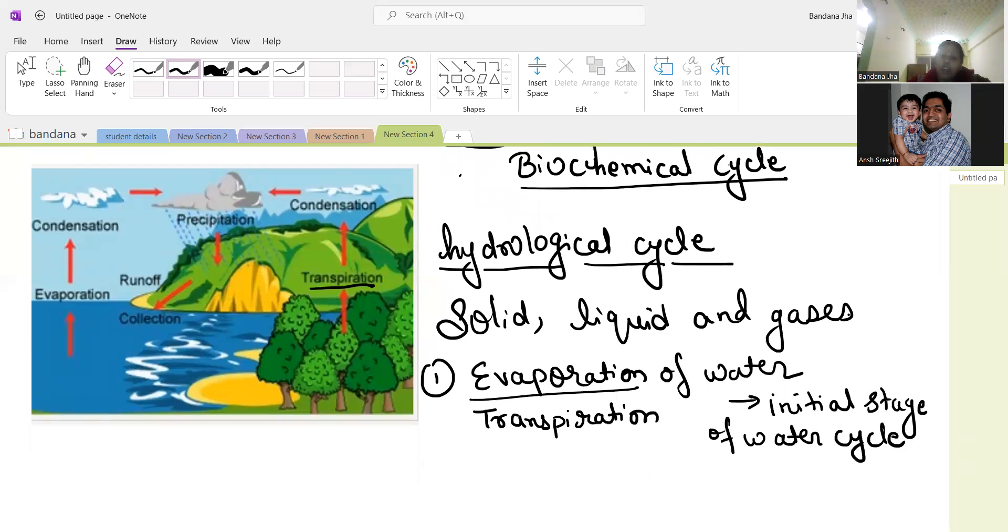When water evaporates, the process by which water changes into the liquid shape during the process of photosynthesis or because of the sunlight, water evaporates - that term is known as water evaporation. Water evaporates in the air because it is gaseous, so it will go upward. Then it condensates.